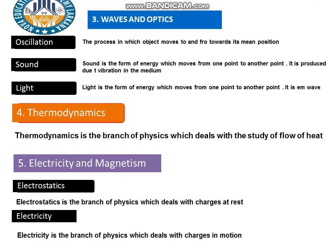The third branch is waves and optics. A wave is a form of energy which travels from one point to another point. Waves impart energy rather than matter. Waves can be categorized into mechanical waves and non-mechanical waves. Mechanical waves are also called electromagnetic waves.